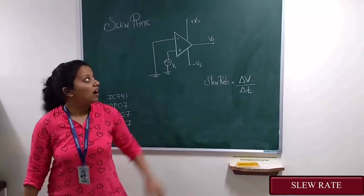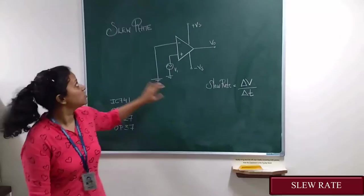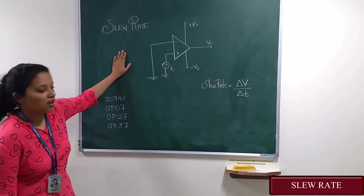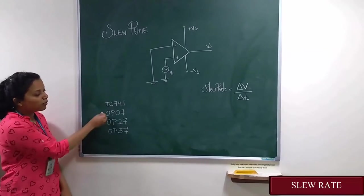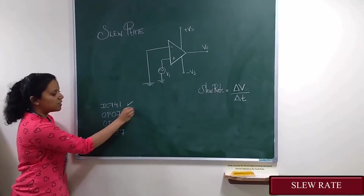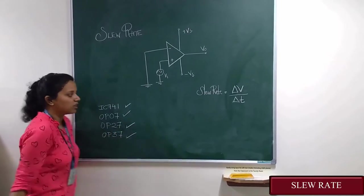Welcome to CE2 Lab. Our today's experiment is to check the slew rate of various OPAMs. For that we are using four different types of operational amplifiers: IC741, OP07, OP27, and OP37.